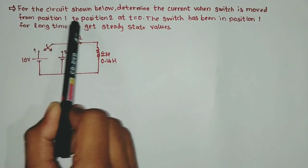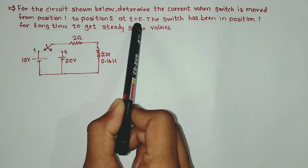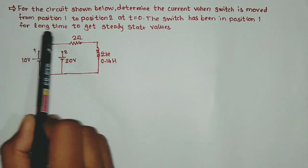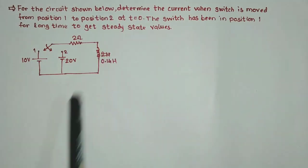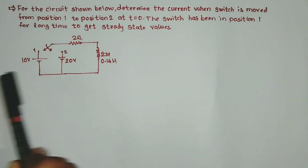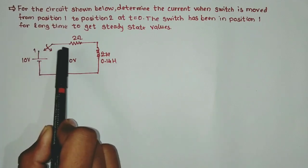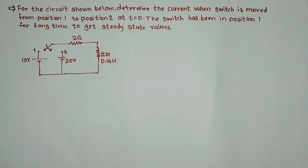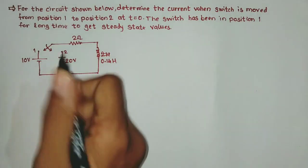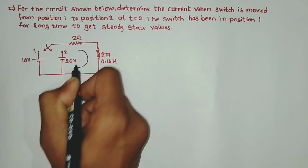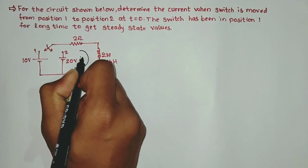The switch has been in position one for a long time to get steady state values. You can see that this is switch one and this is switch two. We have to determine the current for switch two. Let us consider this current as i of t.